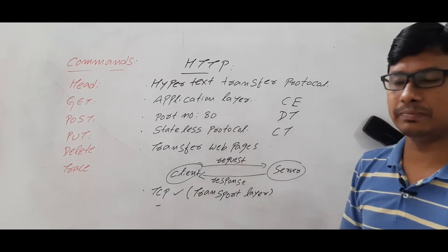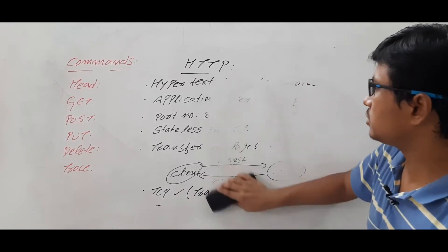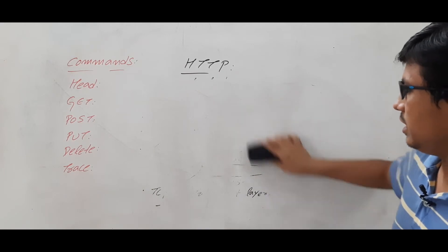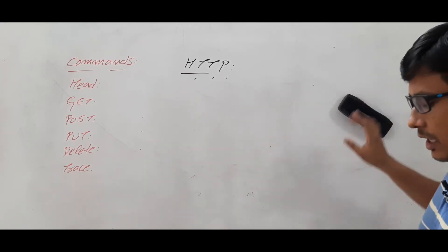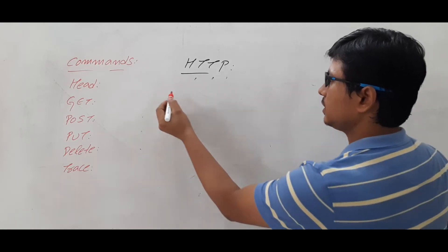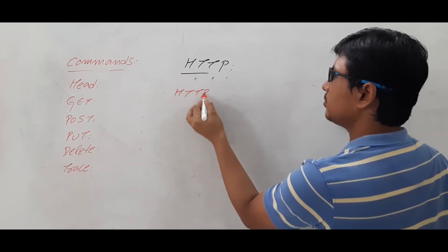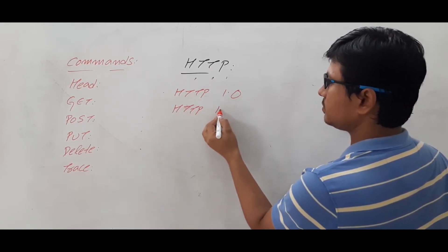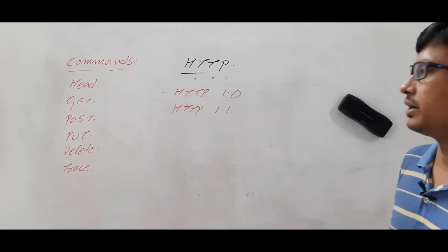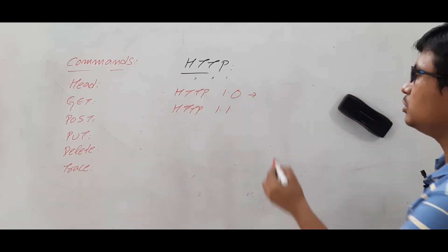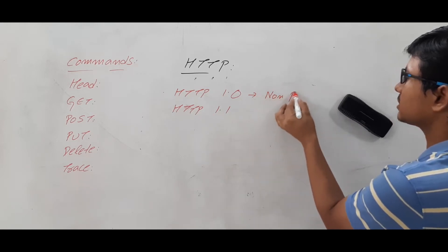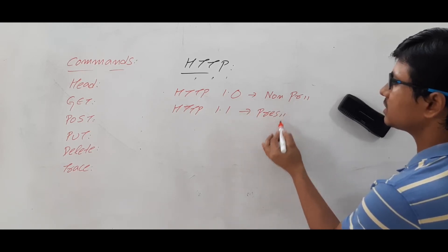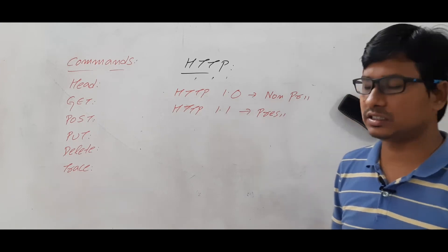HTTP has two versions: HTTP 1.0 and HTTP 1.1. HTTP 1.0 uses non-persistent connections, whereas HTTP 1.1 uses persistent connections.